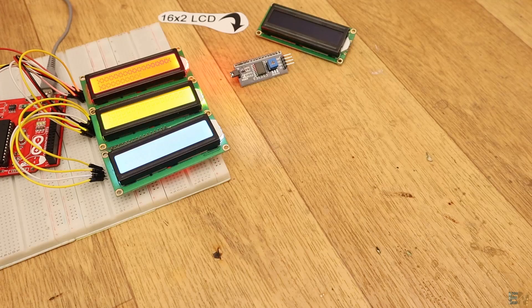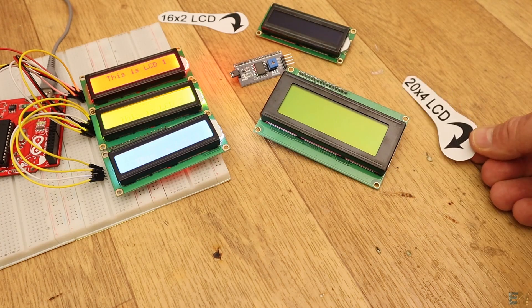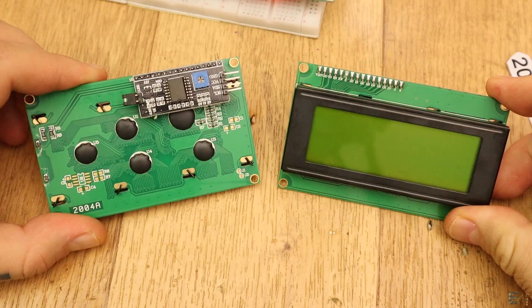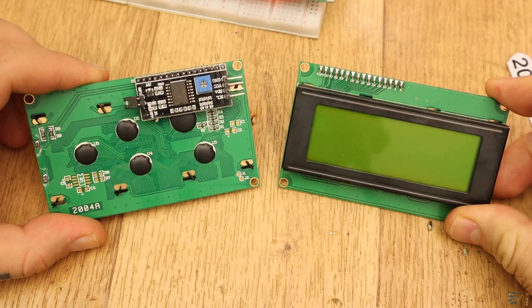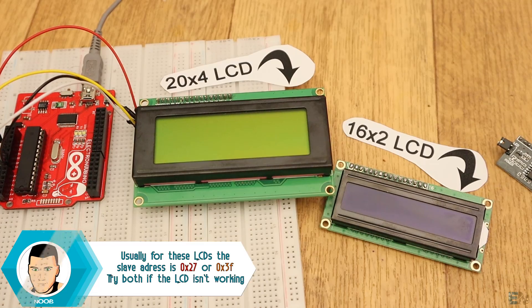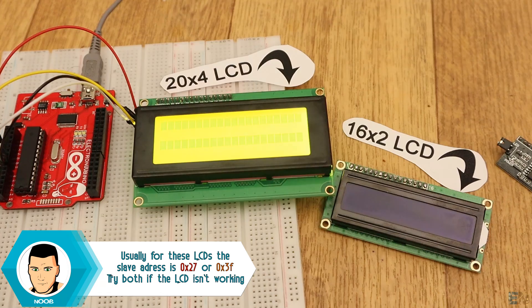In the same way we also have this 20x4 LCD. It uses the same libraries but is bigger. With the same I2C module sorted on the back of the LCD and using the same schematic, upload the next code and now we could use a bigger LCD.